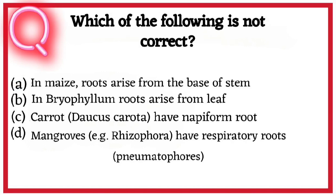Seventh question. Which of the following is not correct? A. In maize, roots arise from the base of stem. B. In Bryophyllum, roots arise from leaf. C. Carrot (Daucus carota) has napiform root. D. Mangroves, e.g. Rhizophora, have respiratory roots (pneumatophores). So correct answer hai option C. Carrot has napiform root.